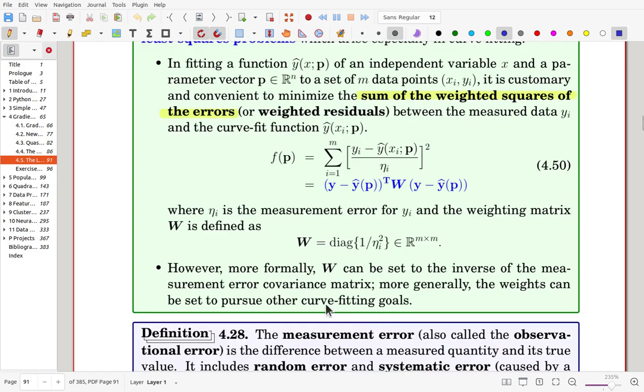However, for the weighting matrix W, you can choose it to be the inverse of the measurement error covariance matrix rather than diagonal matrix. More generally, the weighting matrix can be chosen for the purpose of curve fitting, so that the optimization can be carried out effectively, efficiently and accurately.